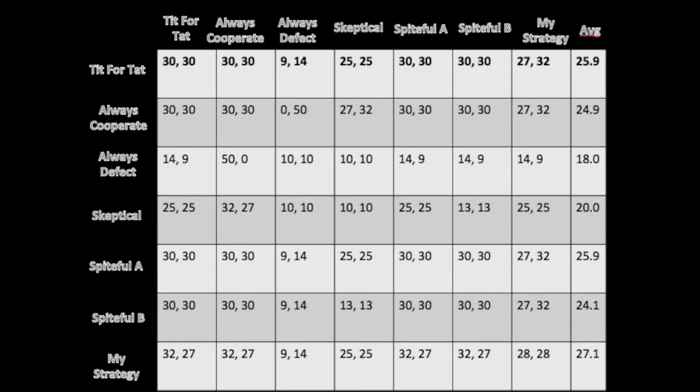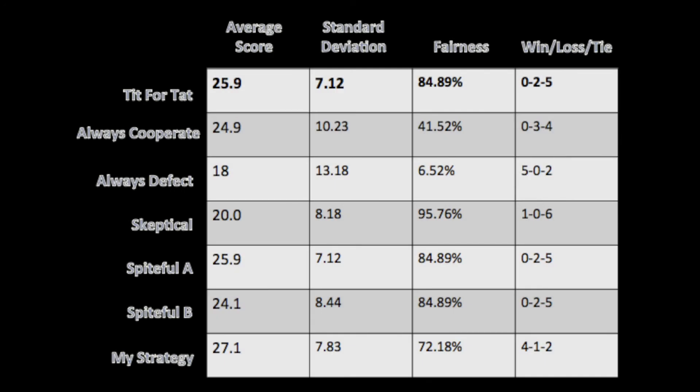When analyzing this data, the average score isn't necessarily the greatest way to determine which strategy is the best. There are many other things to take into account, like whether the strategy is consistent from round to round or fair to the other player. I came up with four different ways to analyze these strategies, and each one has its merits. The average score tells you how well the strategy does against all other strategies, while the standard deviation tells you how consistent your strategy is from round to round, independent of what strategy you're going against. Lower standard deviations correspond to more consistent strategies.